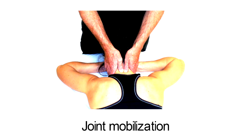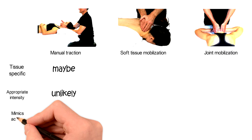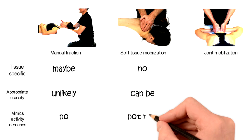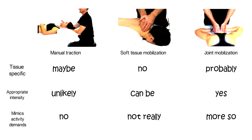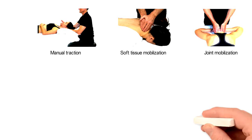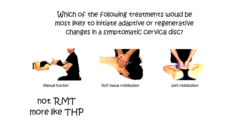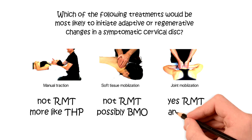Now let's consider each of these manual techniques relative to our criteria for restorative mechanotherapy. As you can see, manual traction does not meet the three criteria for restorative mechanotherapy. Neither does soft tissue mobilization, because it's not tissue specific. Of the three manual techniques, joint mobilization is the one that most closely meets the criteria for restorative mechanotherapy.